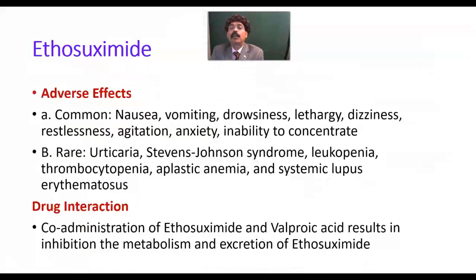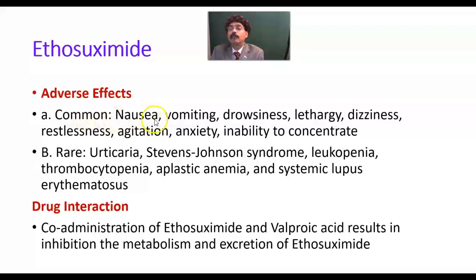What are the adverse effects of ethosuximide? There are two types: common and rare adverse effects. Common adverse effects include nausea, vomiting, drowsiness, lethargy, dizziness, restlessness, agitation, anxiety, and inability to concentrate.